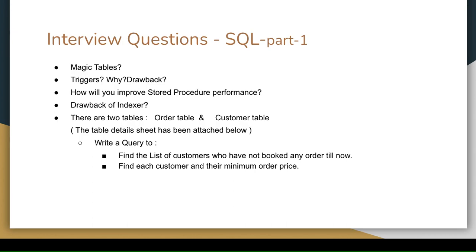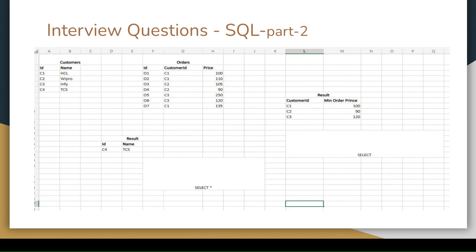We have to find the list of customers who have not booked any order till now. Let us go with the example. You can see here is a customer table - ID C1, C2, C3, and C4. In the corresponding order table, each customer's ID has some transactions like 100 rupees, 110, 105, something like that, and there is an order ID as well.